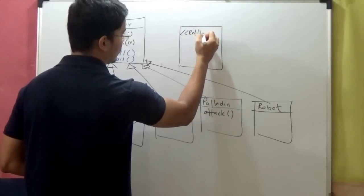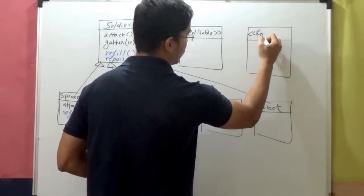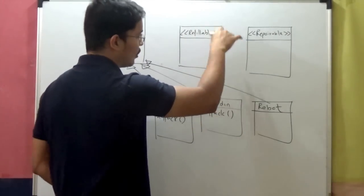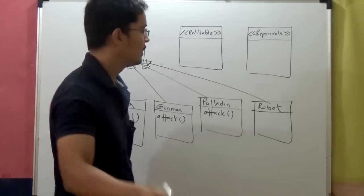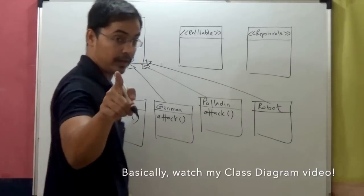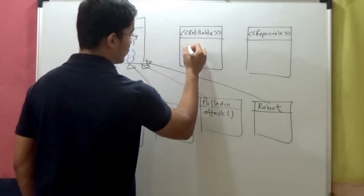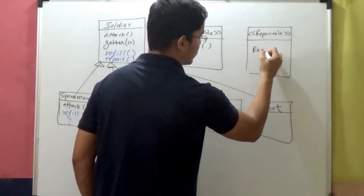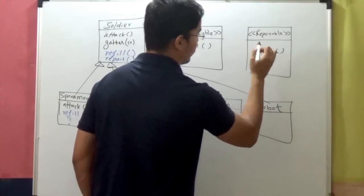So what I will do is I'll write two interfaces, refillable and repairable. I know the symbol of interface is a bit different, like you write interface and then below that you write, but imagine we have learned class diagram, you know the exact notation. I'm just a bit, I don't have enough space. So refillable interface will have some refill method, and repairable interface will have some repair method.